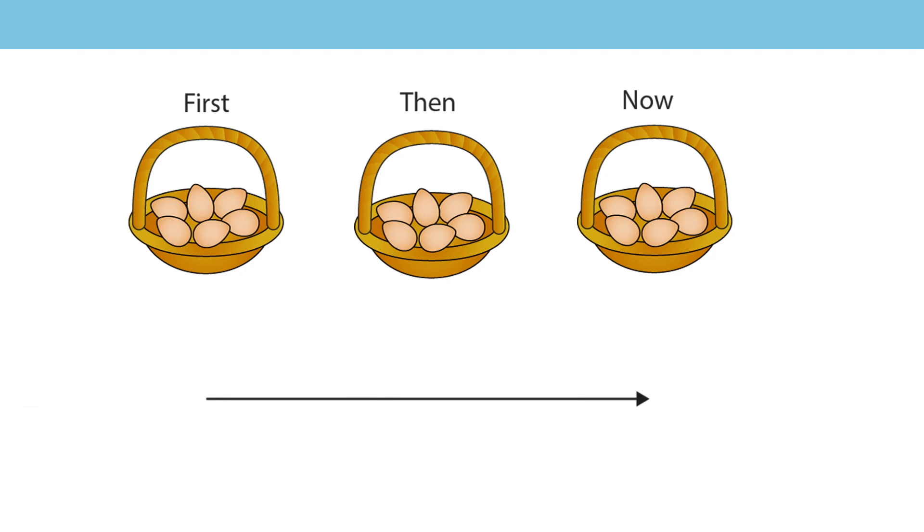In this story, I started with 6 eggs. What happened next? That's right. I subtracted 0 eggs from the basket. That means that I still have 6 eggs in the basket. 6 subtract 0 equals 6. When we subtract 0 from a number, the number remains unchanged.